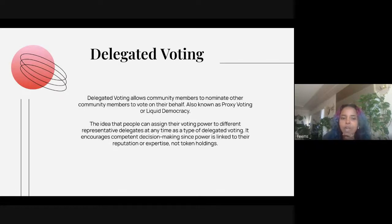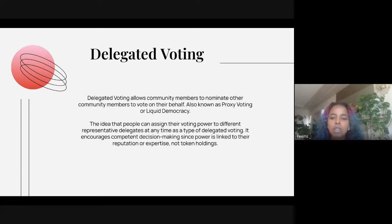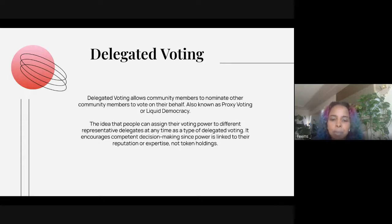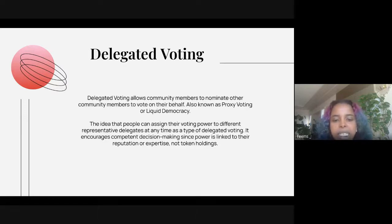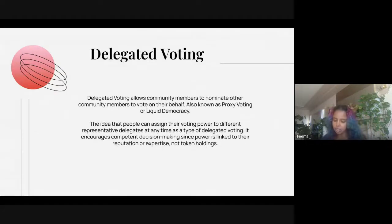Delegated voting allows community members to nominate other community members to vote on their behalf. The common terminology for this is proxy voting or liquid democracy. The idea is that people can assign their voting power to different representative delegates at any time. It encourages competent decision-making since power is linked to reputation or expertise and not token holdings.